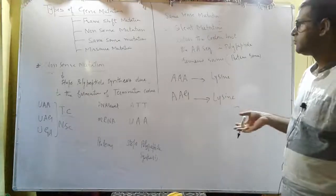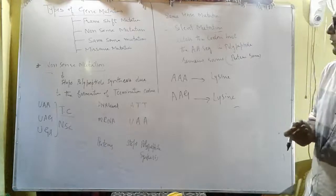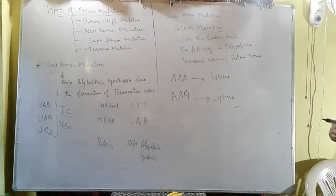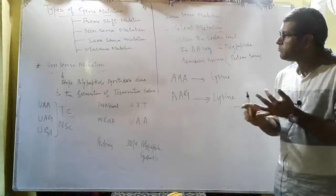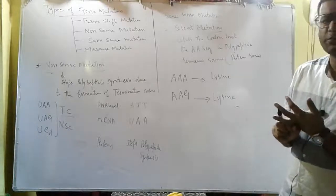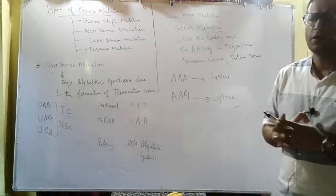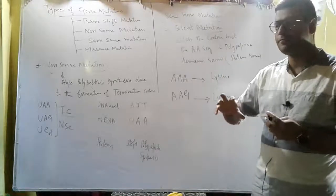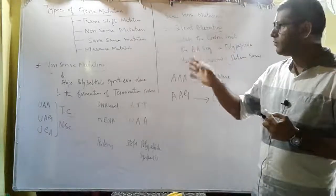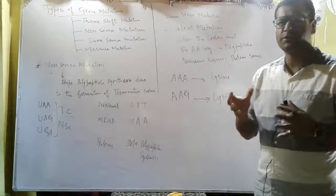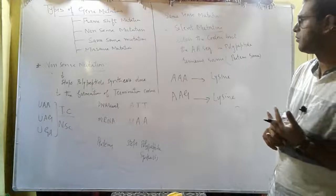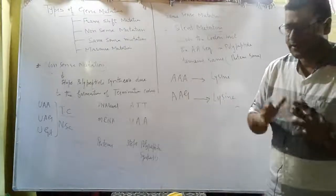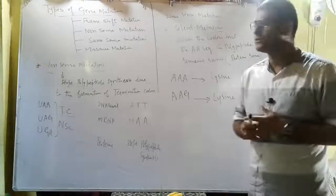So we have talked about frame shift mutation, nonsense mutation, and same sense mutation. In the next lecture we will talk about missense mutation and lethal mutation, forward mutation or reverse mutation. To summarize: frame shift mutation is where the entire reading sequence of bases changes due to addition or deletion of bases. Nonsense mutation is where polypeptide chain synthesis stops due to formation of termination codons UAA, UAG, UGA. Same sense or silent mutation is where codons are altered but the same amino acid sequence remains in the polypeptide chain.